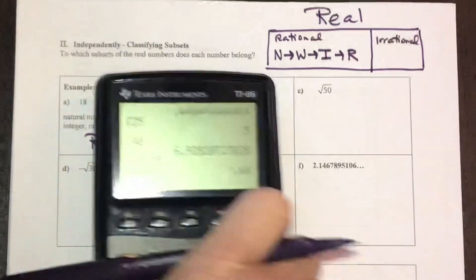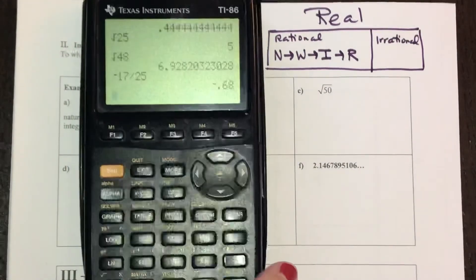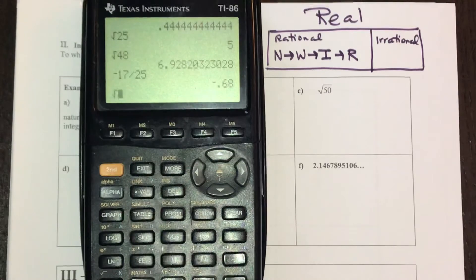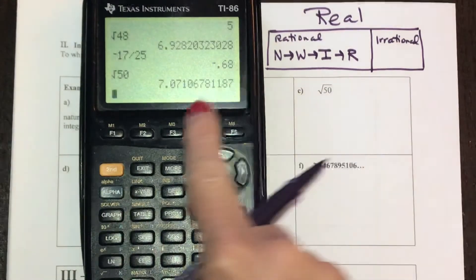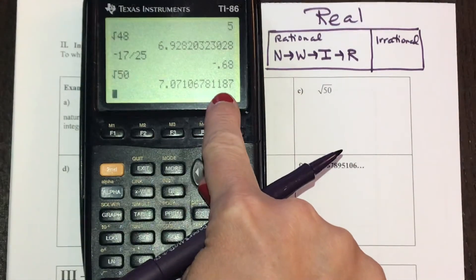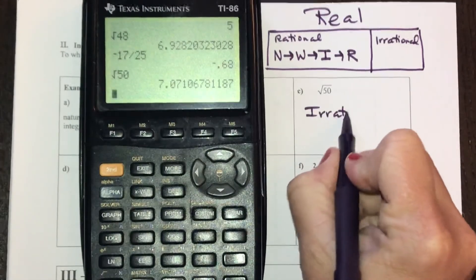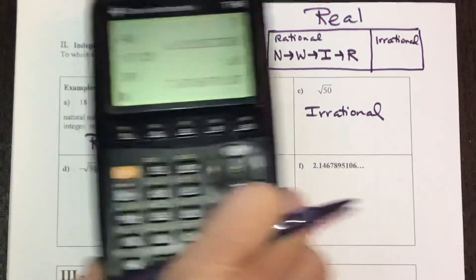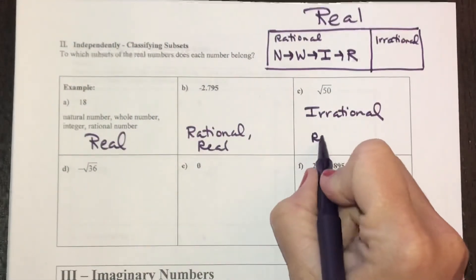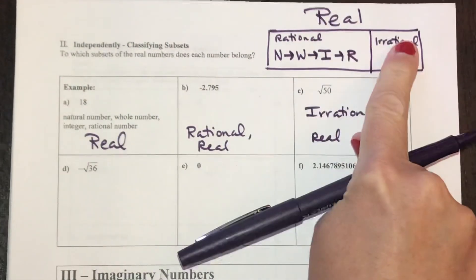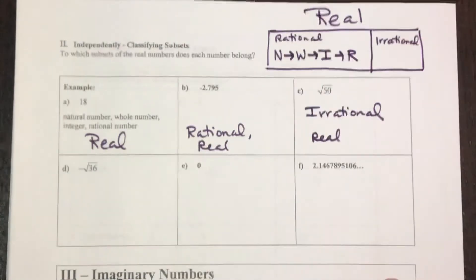Square root of 50, I'm pretty sure that's going to have a decimal, so let's check it out. This decimal doesn't stop, it doesn't repeat, so that's going to be irrational. It is also a real number because both rational and irrational make up real numbers.